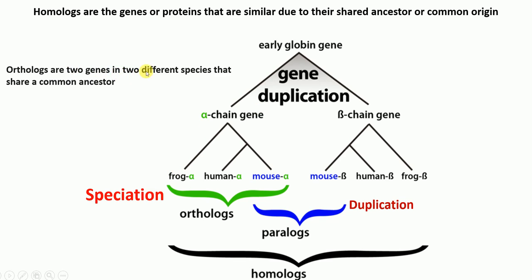So the alpha chain gene in frog and the alpha chain gene in human are orthologs — they are two genes in different species that have a common origin, and this occurs due to speciation events.